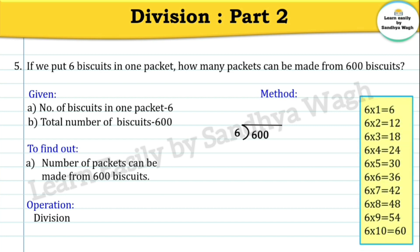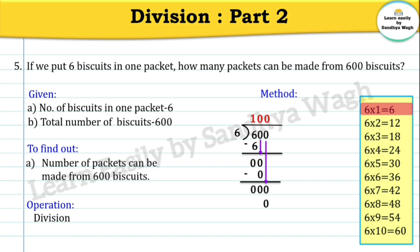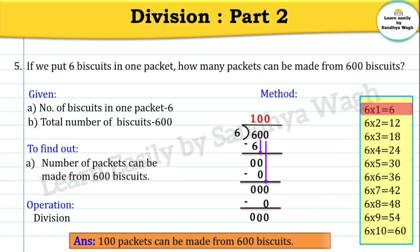600 is the dividend and 6 is the divisor. Dividing the leftmost digit 6 — 6 ones are 6, write 1 as the quotient. Subtract 6 from 6, giving 0. Bring down the next digit 0 — 6 zeros are 0, write 0 as the quotient. Subtract 0 from 0, giving 0. Bring down the next digit 0 — 6 zeros are 0, write 0 as the quotient. Subtract 0 from 0, giving 0. So our quotient is 100 and remainder is 0. The final answer is 100 packets can be made from 600 biscuits.